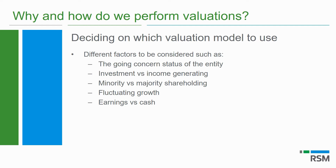We also consider whether the company is an investment only or does it actually generate income from producing goods. Do we value a minority or a majority shareholding? There is a premium on a majority shareholding and a discount on a minority shareholding. If growth is going to fluctuate a lot, you might not be able to use a simple method. We also consider whether we are trying to value earnings or the cash flow coming out of those earnings — all of these factors need to be considered when choosing a valuation method.